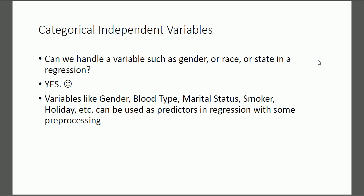Welcome back to part four of this introduction to multiple regression. In this final part, we're going to talk about how to handle categorical independent variables — things like gender, race, state, political affiliation, blood type, marital status, whether you're a smoker or not, whether it's a holiday or not — can be used as predictors in regression with some preprocessing.